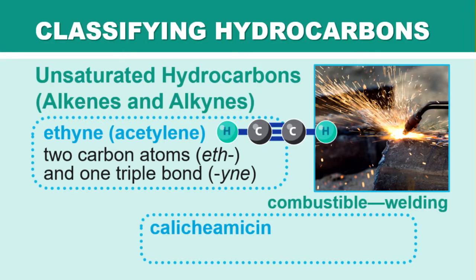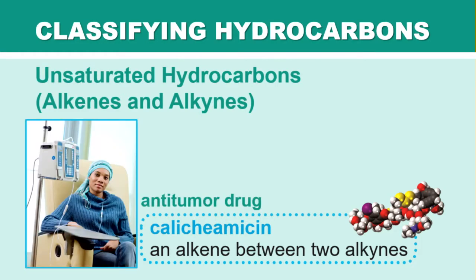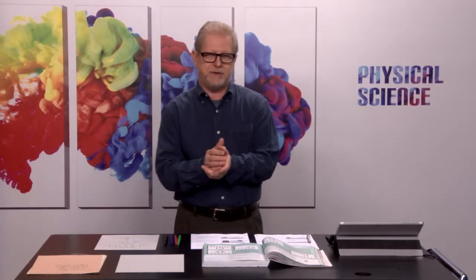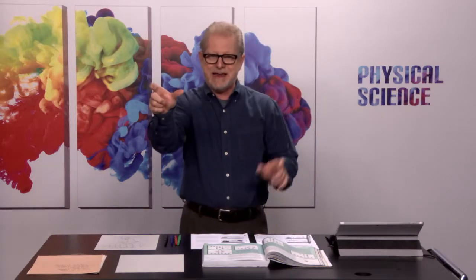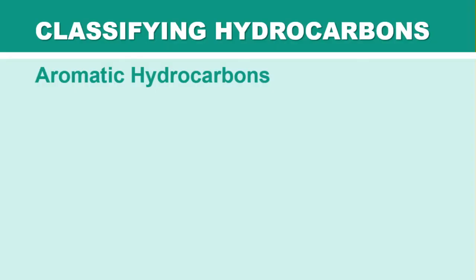Here's a complex example — calicheamicin — which has an alkene between two alkynes. It's actually an antitumor drug used in chemotherapy to kill tumor cells. It contains both 'ene' and 'yne' groups. Note that 'calicheamicin' is a common name, not its IUPAC name — the IUPAC name would contain 'ene' and 'yne' explicitly in it.